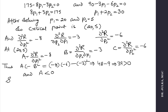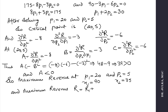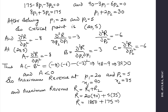So maximum revenue occurs at p1 equals 20 and p2 equals 5. The corresponding values are x1 equals 90 and x2 equals 35. Maximum revenue R equals R1 plus R2, where R1 is 20 times 90 and R2 is 5 times 35, giving a total maximum revenue of 1975.